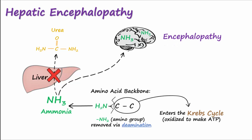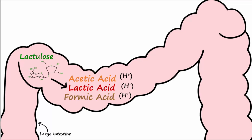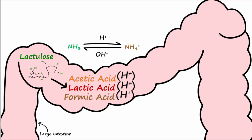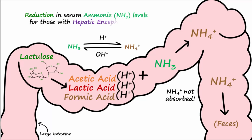Lactulose administration helps to bring down ammonia levels in the body. When lactulose is converted by gut flora into acetic, lactic, and formic acids, an acidic environment is created that causes a change in the relative amounts of ammonia and ammonium ion. The acidic environment, or additional hydrogen ions, causes ammonia (NH3) to be more readily converted into ammonium ion (NH4+). NH4+ is charged and is therefore unable to cross membranes for absorption into the blood, so instead it is excreted in the feces. This excretion leads to a reduction in serum ammonia levels for those with hepatic encephalopathy.